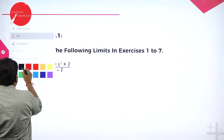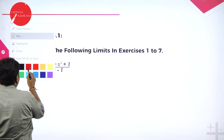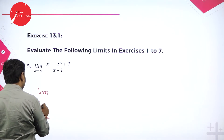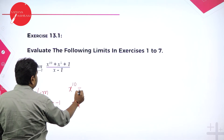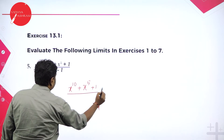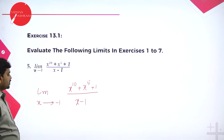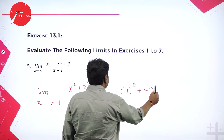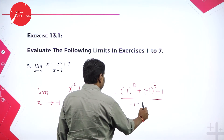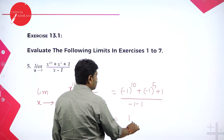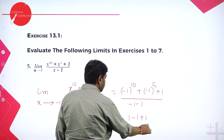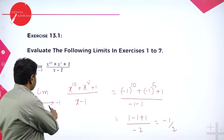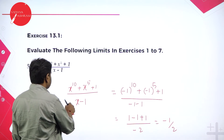Problem 5: limit x tends to minus 1, x power 10 plus x power 5 plus 1 divided by x minus 1. In the place of x, put minus 1. Minus 1 power 10 plus minus 1 power 5 plus 1, divided by minus 1 minus 1. Minus 1 to an even power gives plus 1; minus 1 to an odd power gives minus 1. So we get 1 minus 1 plus 1 divided by minus 2, which is 1 divided by minus 2 — so the answer is minus 1 by 2.